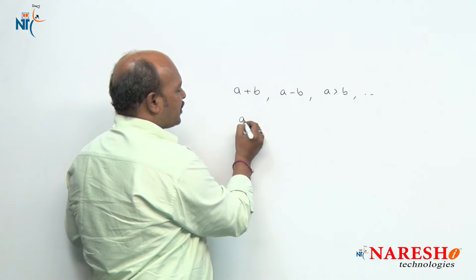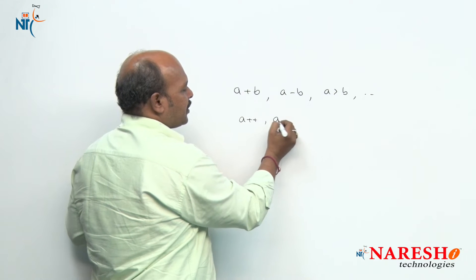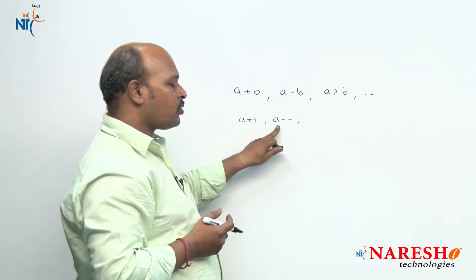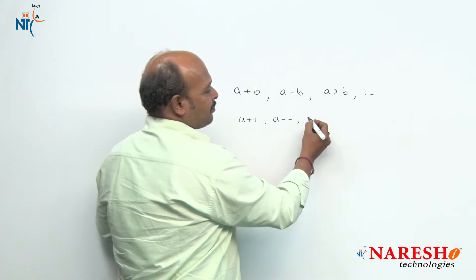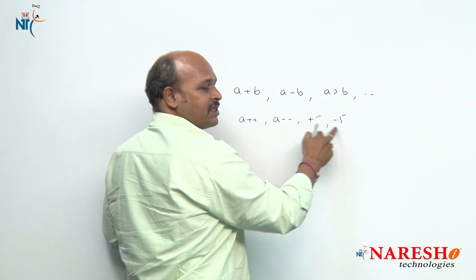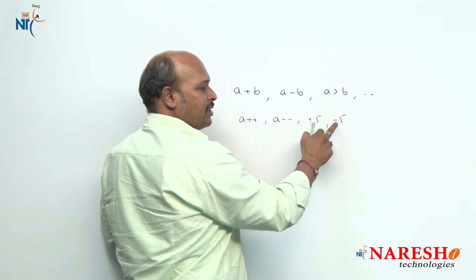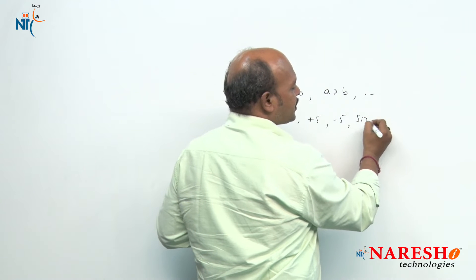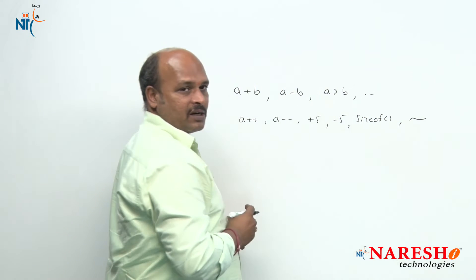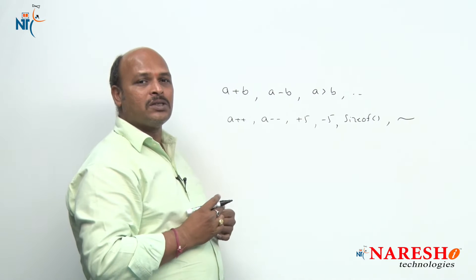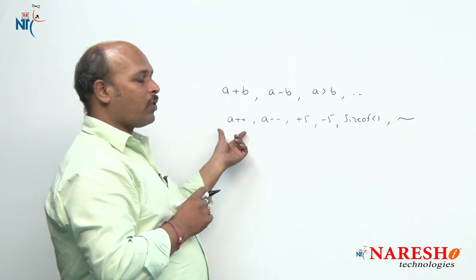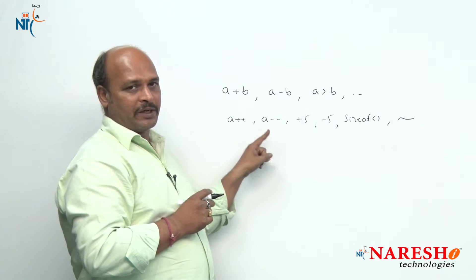Now see a plus plus, a minus minus — here only one operand is there. So it is called unary plus and unary minus. There is also sizeof operator and tilde operator. All these are called unary operators. In this example, I want to show you how to overload increment and decrement operators.